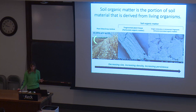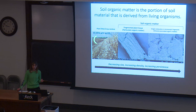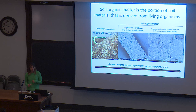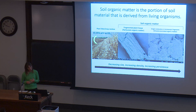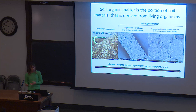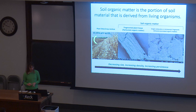Within soil organic matter, we think about two key fractions. Particulate organic matter is basically fragmented plant tissue that may be encrusted with soil minerals but still maintains some visible similarity to the original litter. And then mineral-associated organic matter may be single molecules or microscopic fragments associated with the smallest soil particles — the clay and silt particles. As we move from left to right, we're decreasing in size, increasing in density, and increasing in persistence of the organic matter.